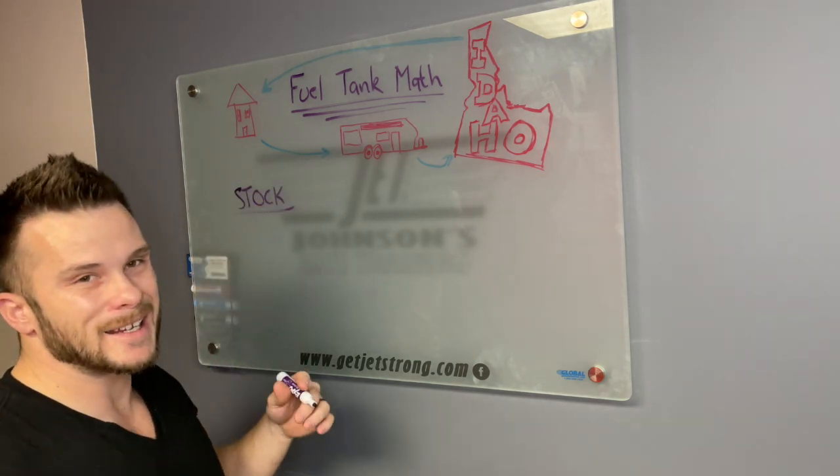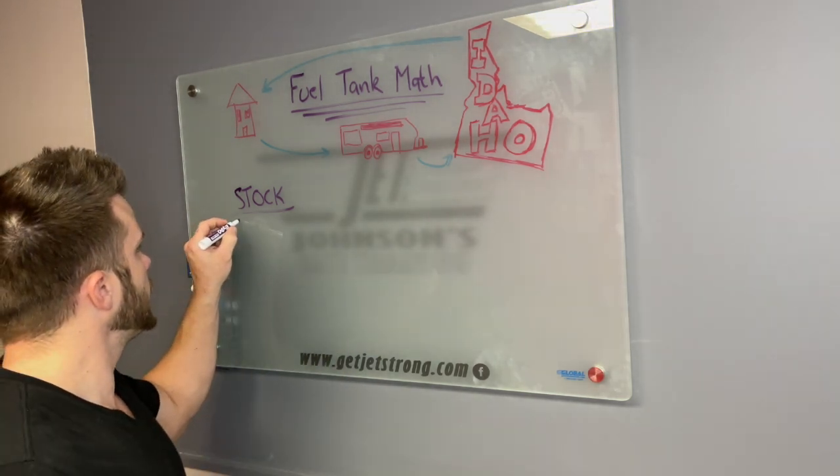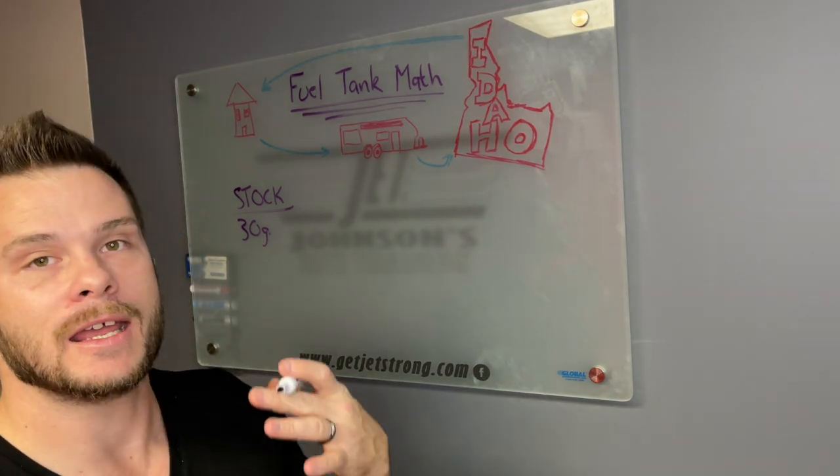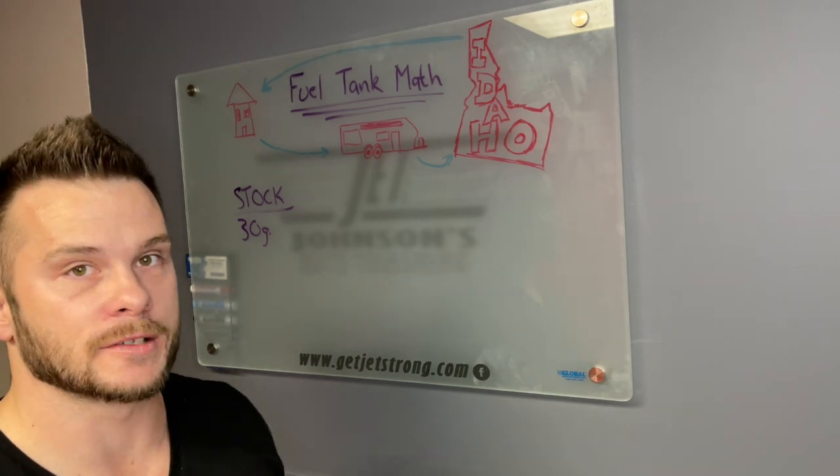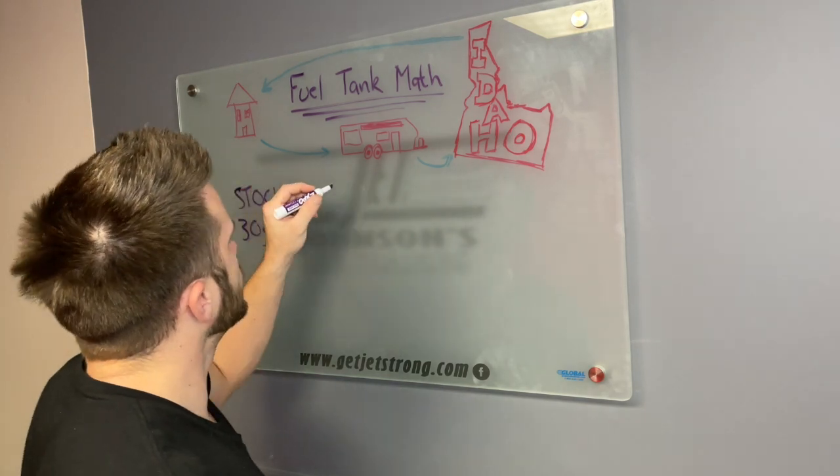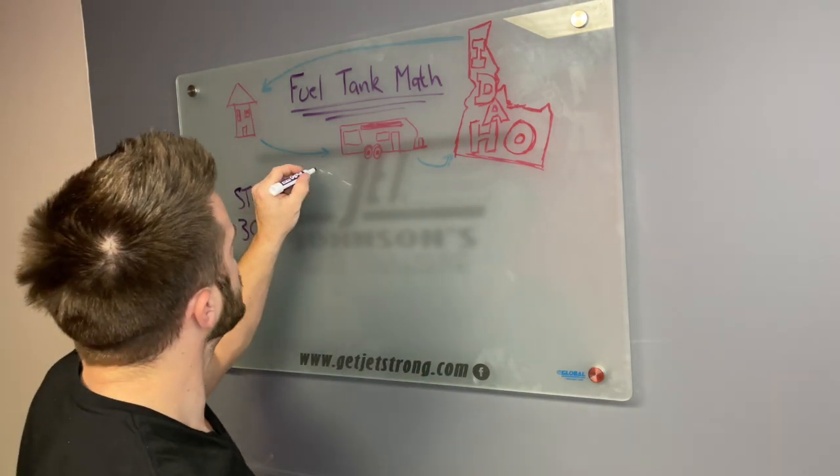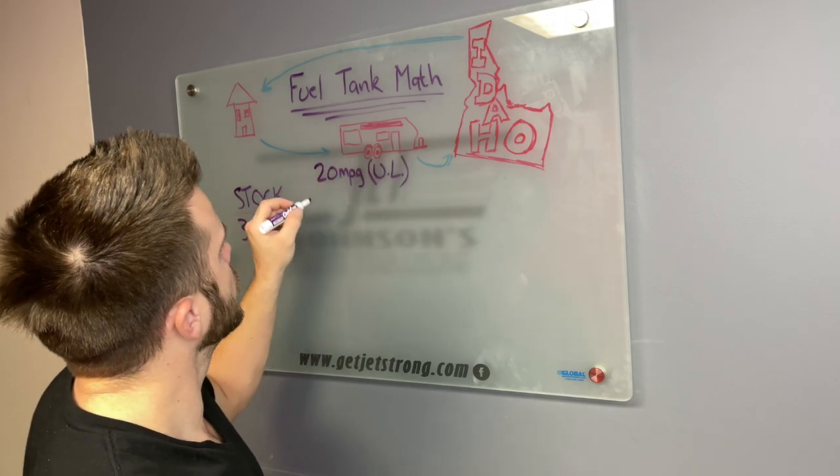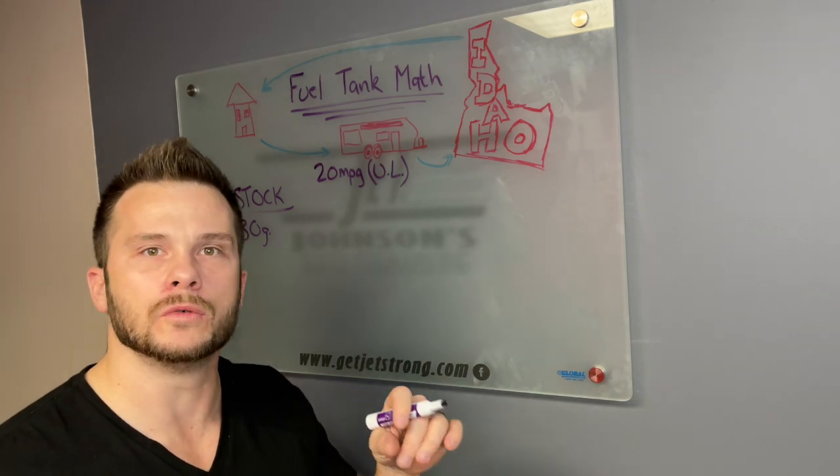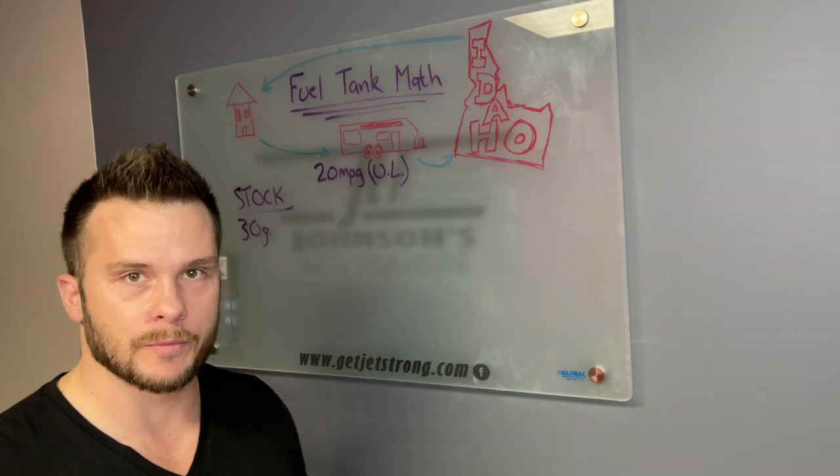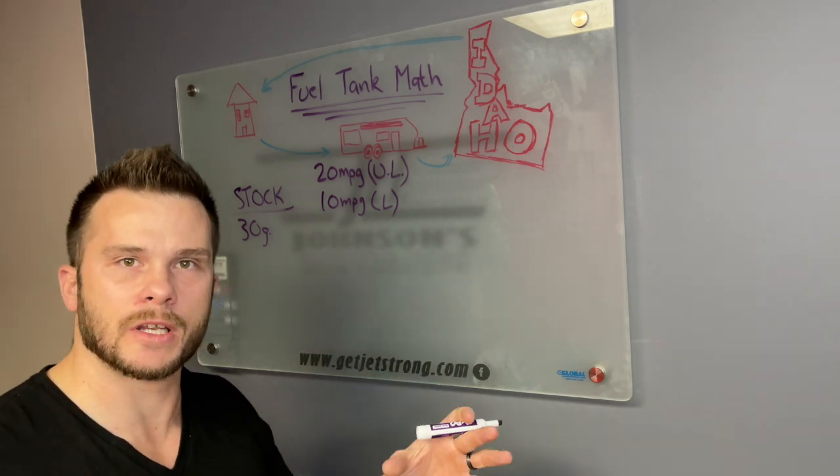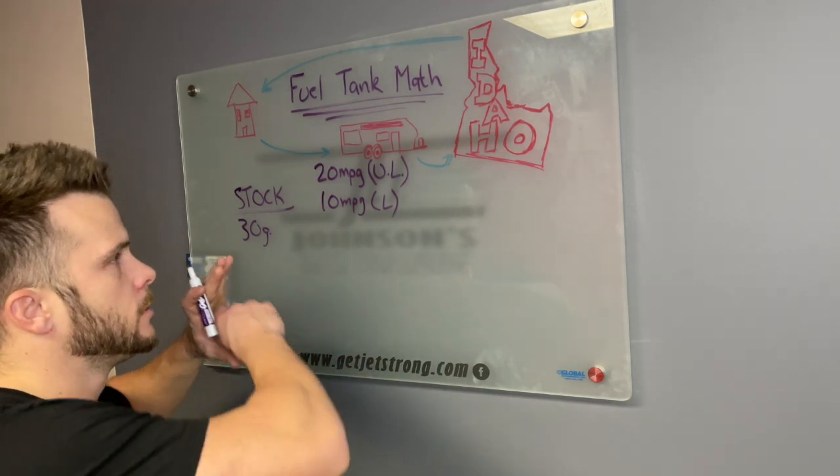With the stock setup, just to keep things simple, there's a 30 gallon tank. When I'm unloaded, I get 20 miles per gallon. Those numbers are going to be for both. When I'm loaded, I'm actually averaging 11.2 miles per gallon right now, but I figured, again, keep it simple at 10 miles per gallon.